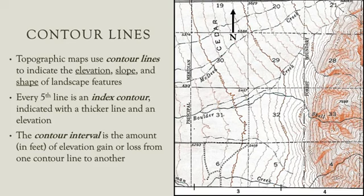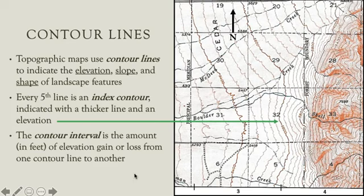Every fifth contour line is an index contour, which is used to index or indicate the elevation along that contour line, and is indicated with a thicker, more heavily weighted line.